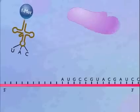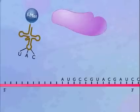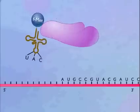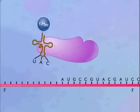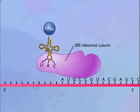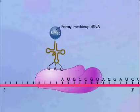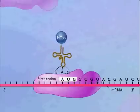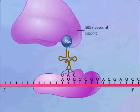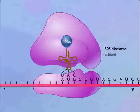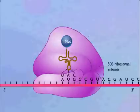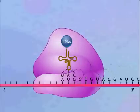In prokaryotic cells, translation is initiated by formation of an initiation complex consisting of the 30S ribosomal subunit, formyl-methionyl tRNA, and messenger RNA. The 50S ribosomal subunit then joins the complex. Proteins called initiation factors are also involved, but are not shown.